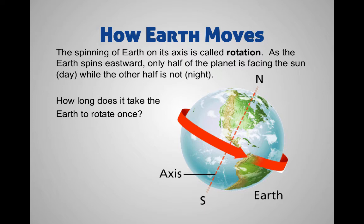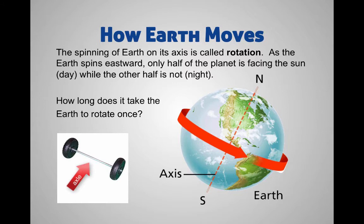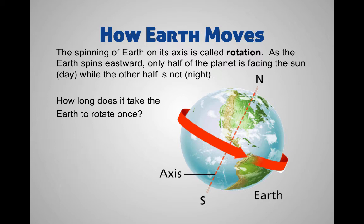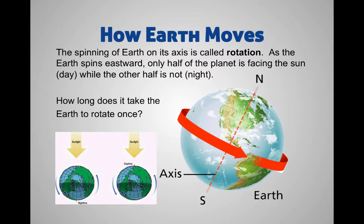The other way that the Earth moves is called rotation — it's the spinning of the Earth on its axis. That word axis looks a little bit like axle, like the axle on a car or a bike, which is the piece of metal or tube that the wheel is spinning on. We have an imaginary axle in the Earth, and that's called our axis. We spin eastward, so we're always spinning towards the east.